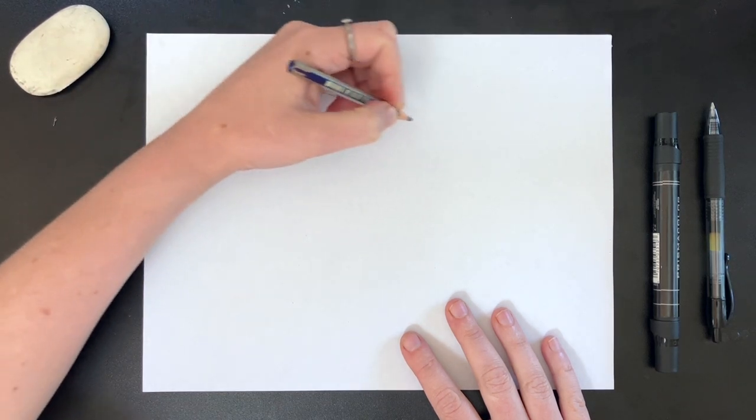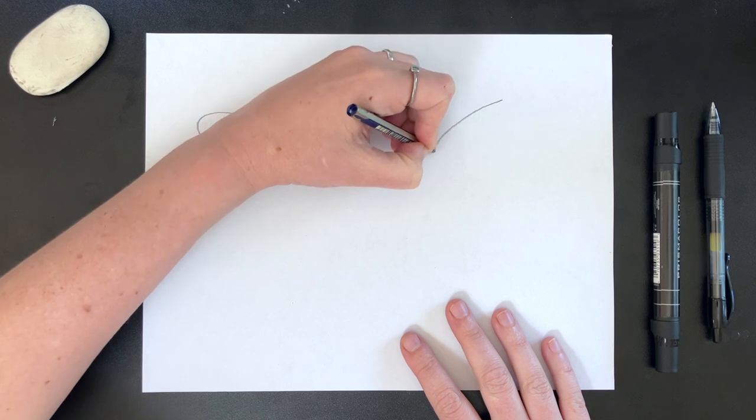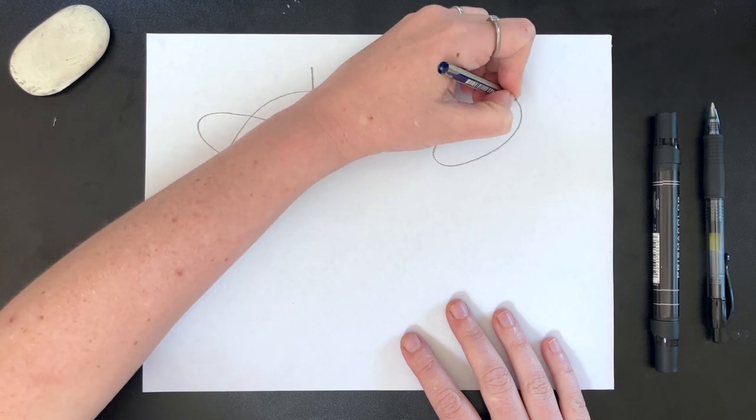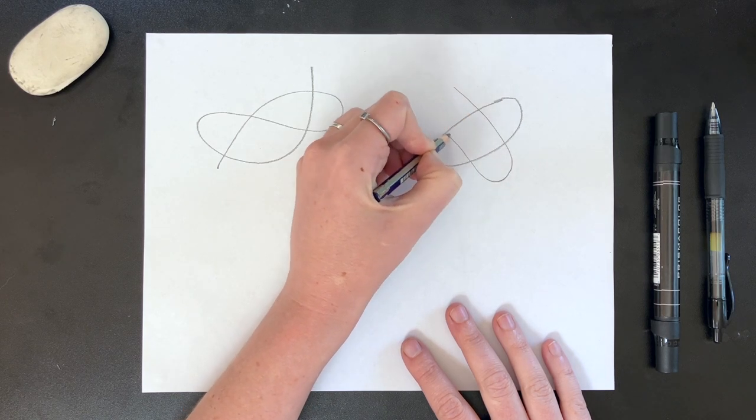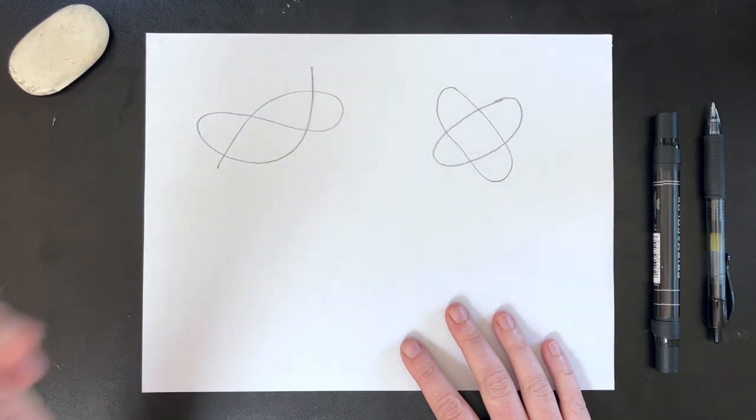No matter how many lines or loops, what shapes we draw, or how they overlap, we can make our scribble weave regularly over and under as long as we follow one guideline: keep any loose ends on the outside of the knot.